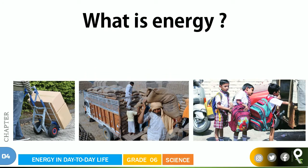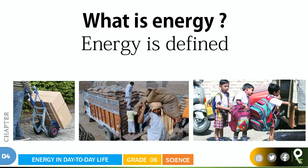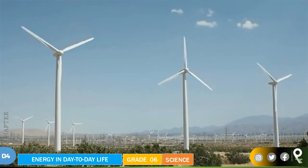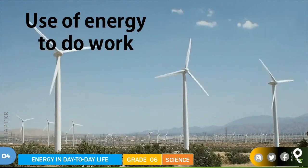Now it's time to understand what that energy is. Energy is defined as the ability to do work. This person carrying the boxes, the uncle carrying the sack, and these kids carrying their bags — when they don't have the ability to do that work, that means they don't have energy to do that work. Now, look at this wind propeller — let's understand the use of energy to do work.